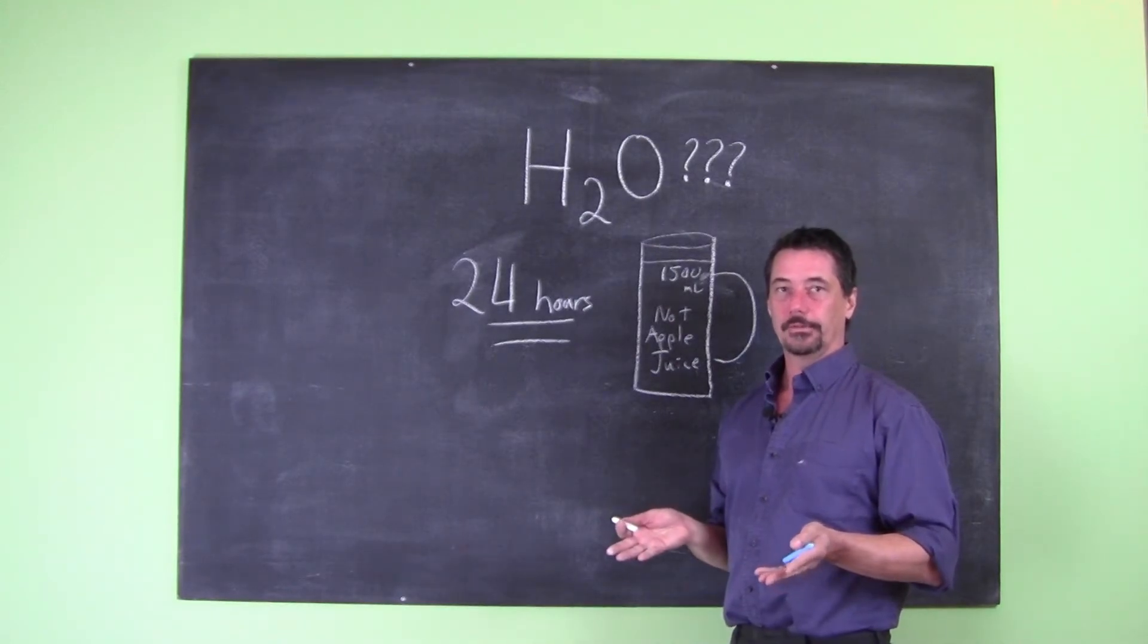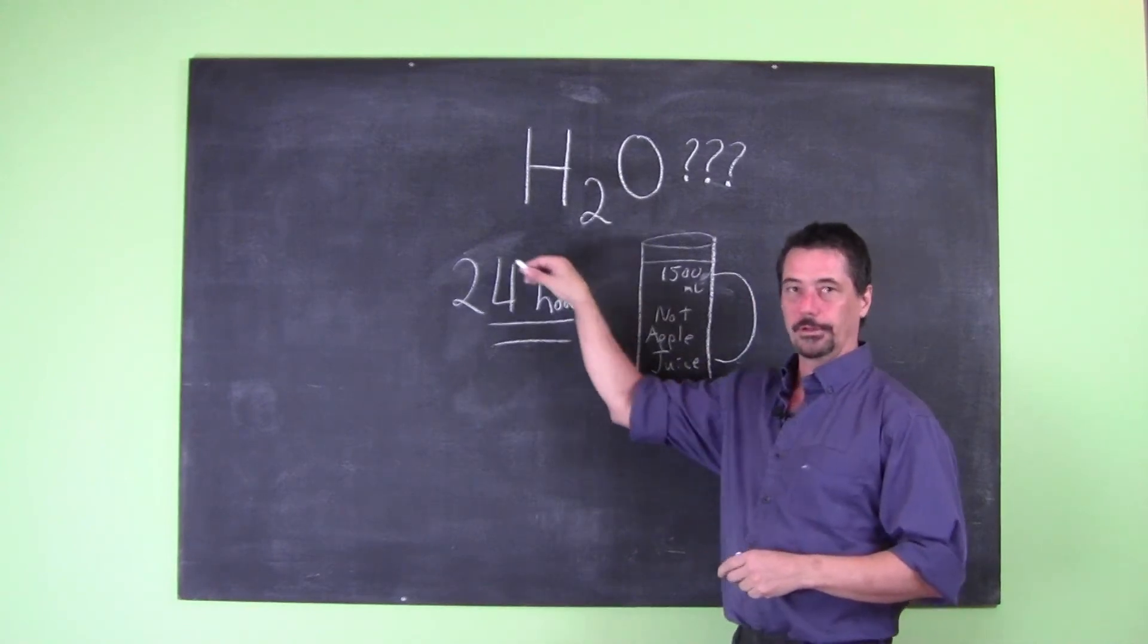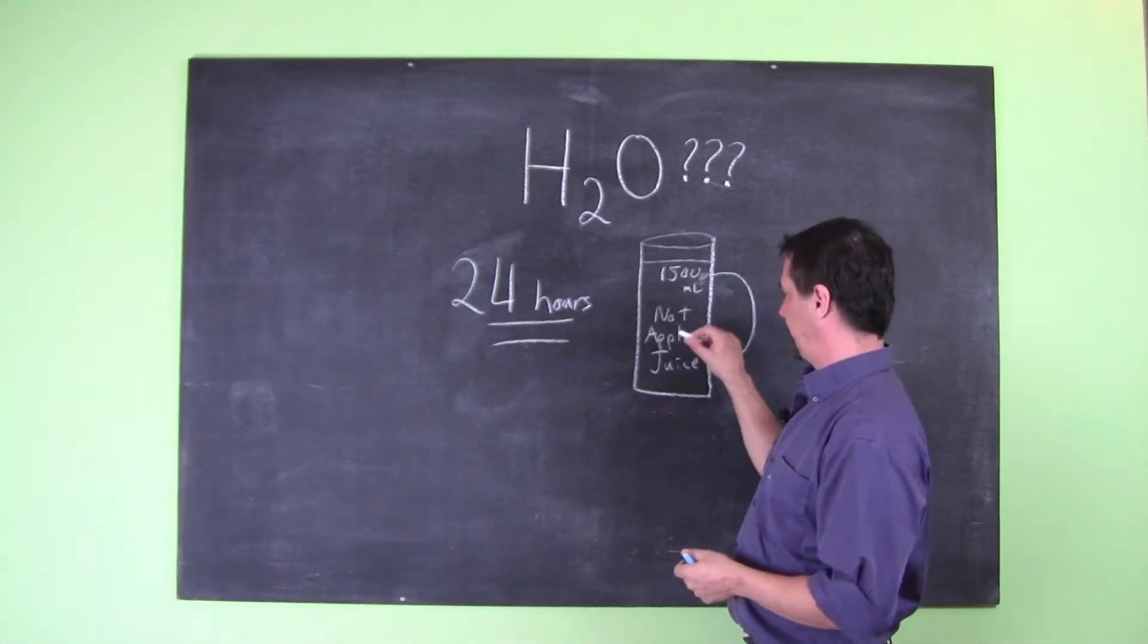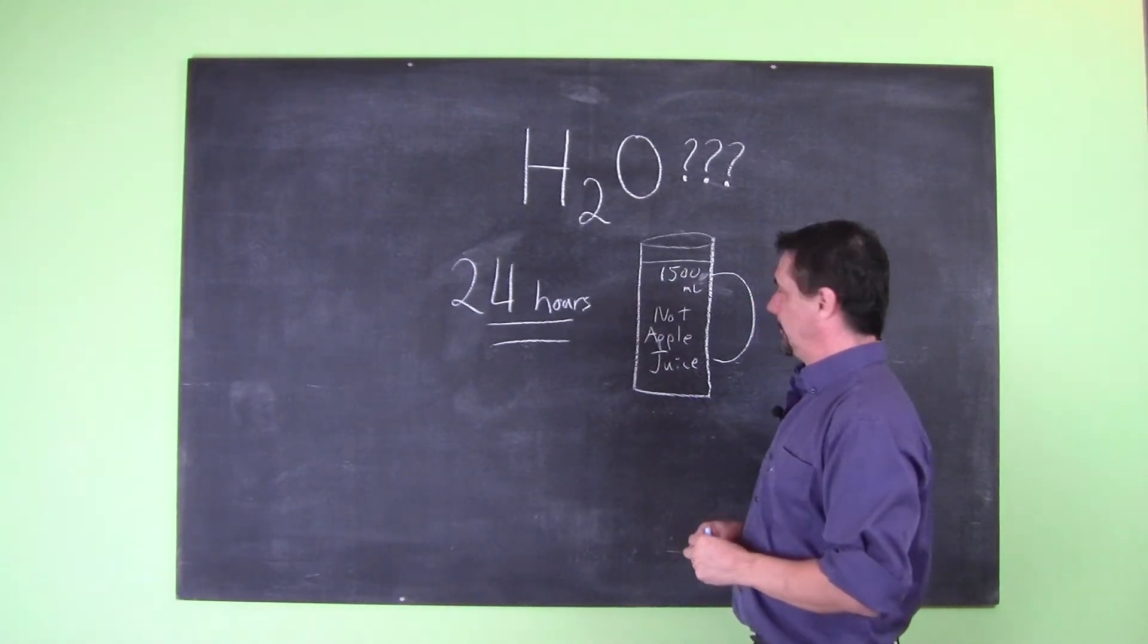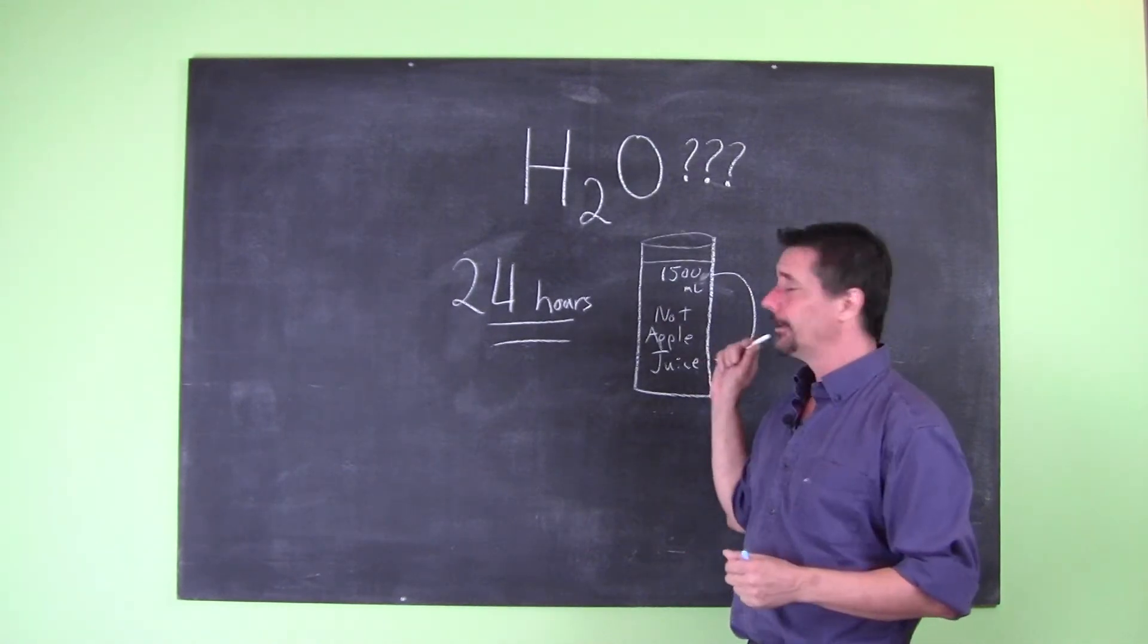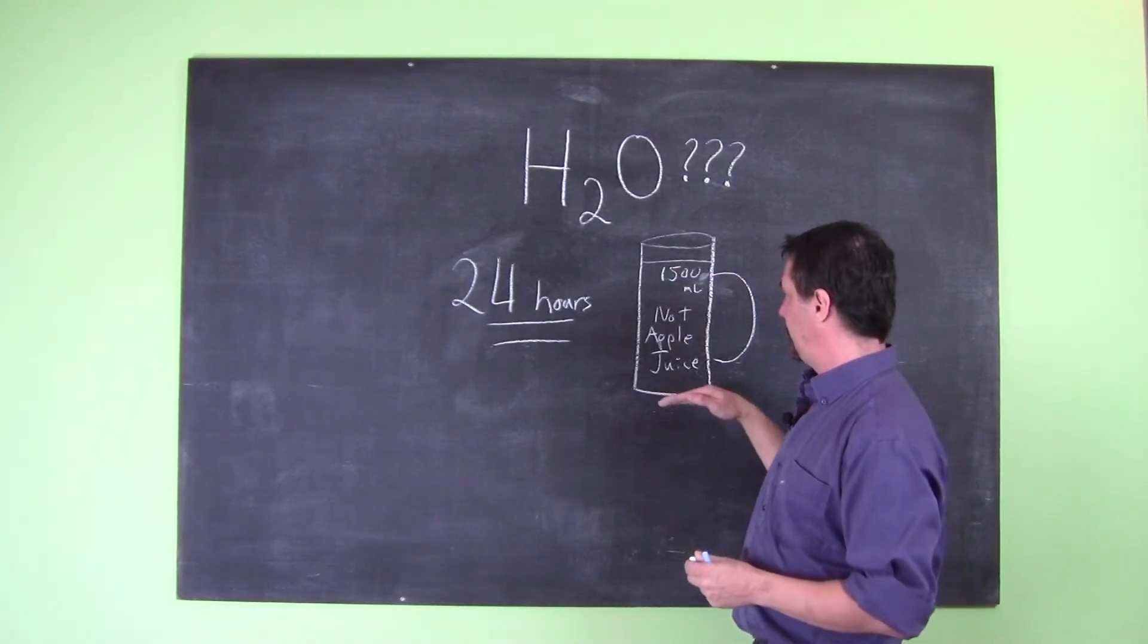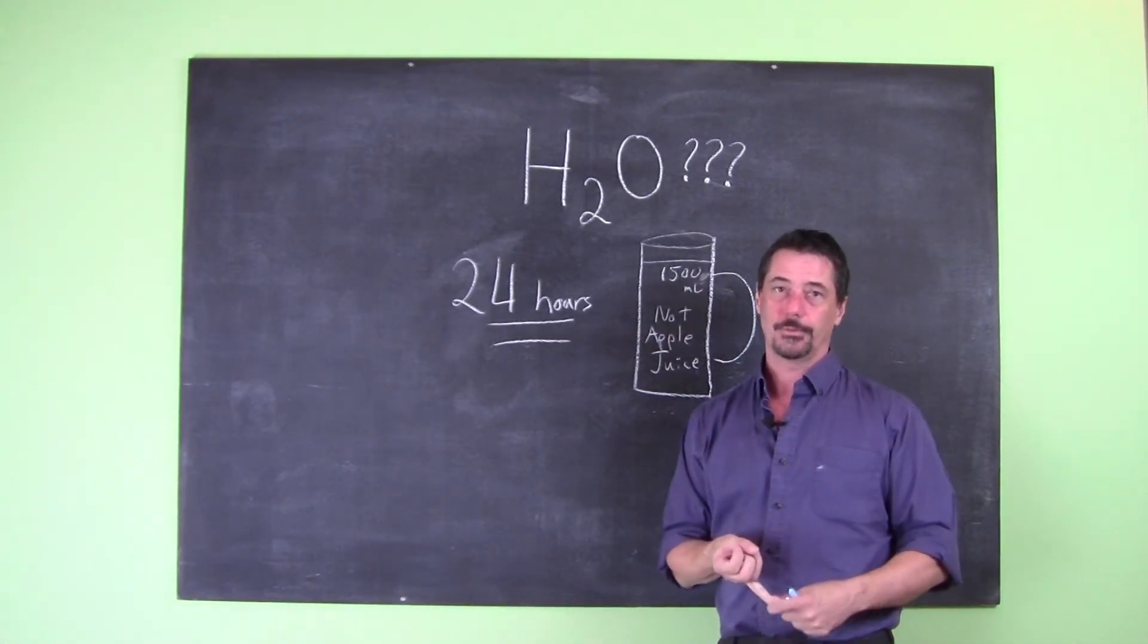So in fact, the easiest way to find out the amount of water that you need, again individually, is to commit a 24-hour period of time, preferably when you're going to be at home, and you're going to have a container sitting probably on the back of your toilet. I recommend writing not apple juice on the container in case you live with other people and they're wondering why there's a bunch of yellow fluids sitting in a container in the bathroom.